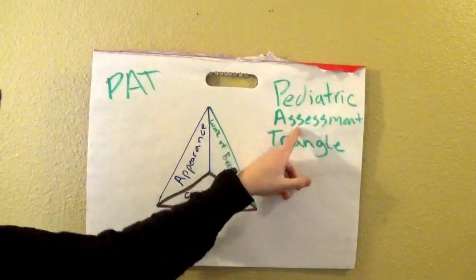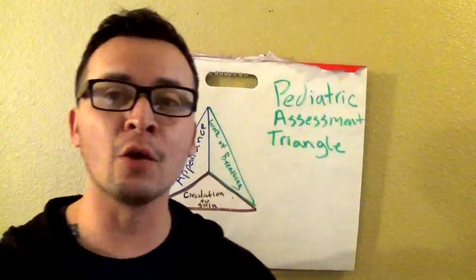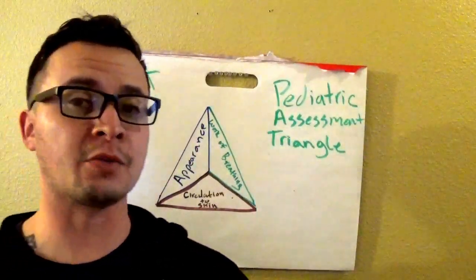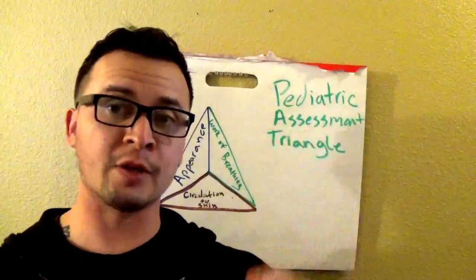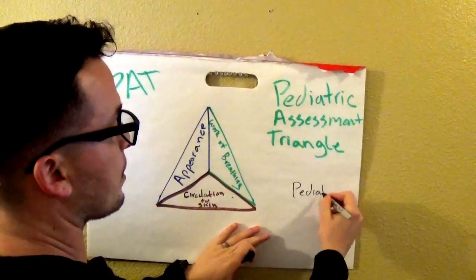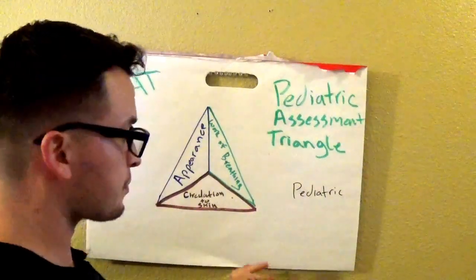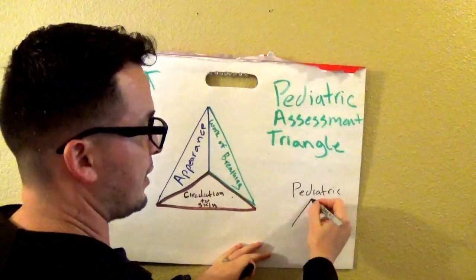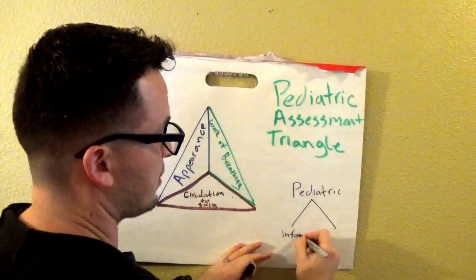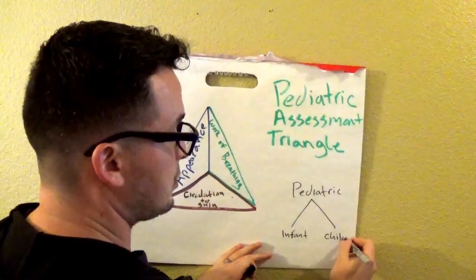Hey guys, how's it going? Today I'm going over PAT, which stands for Pediatric Assessment Triangle, and it's what we use to evaluate a child or pediatric or infant, whatever you want to call them. I prefer the AHA definition: pediatric is an infant and child.